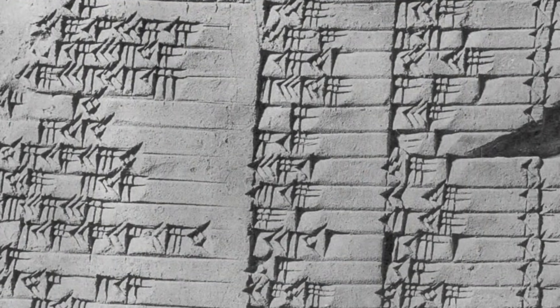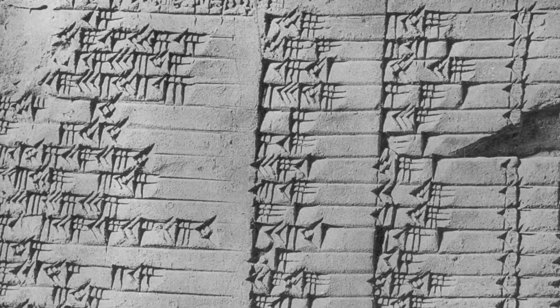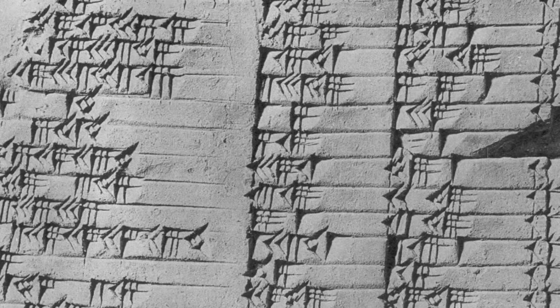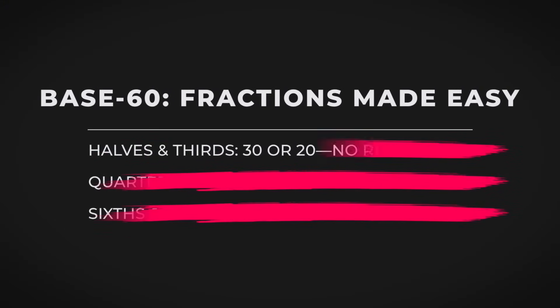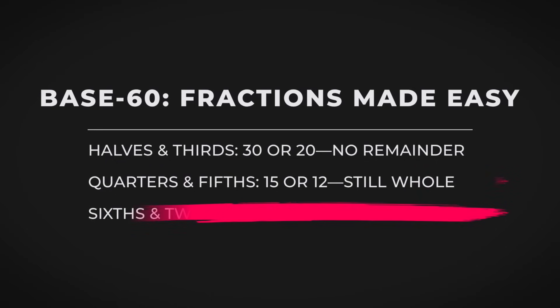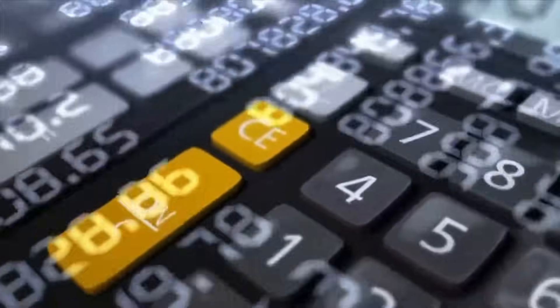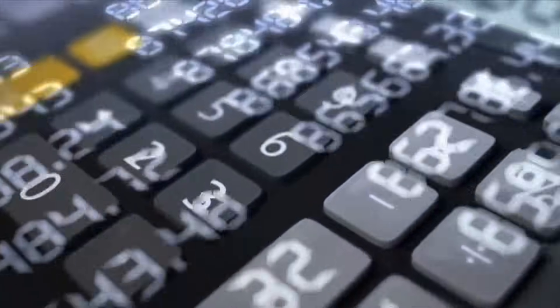60 is a number that plays well with others. It divides cleanly by 2, 3, 4, 5, 6, and even 12. Half of 60 is 30. A third is 20. A quarter is 15. A fifth is 12. A sixth is 10. A twelfth is 5. No messy fractions, just whole numbers. Try that with 10 or 100, and you're stuck with awkward decimals.